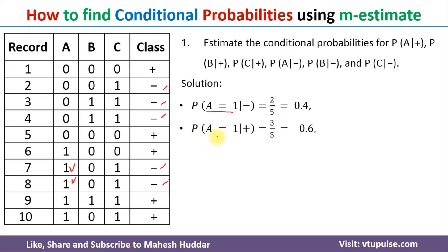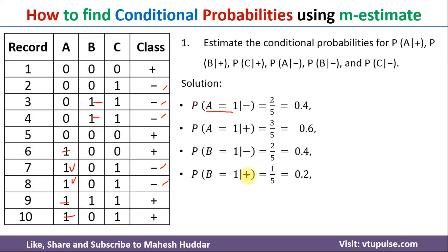The second conditional probability is probability of A equals one given positive. There are five positive examples. Out of five, how many examples have A equals one? There are three such examples, so that is the reason we have written three by five. Similarly, we can calculate the probability of B equals one given negative — that is two by five. Probability of B equals one given positive: out of positive examples, there is only one example where B equals one, so that is one by five.